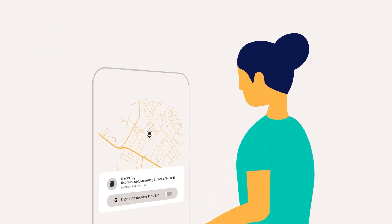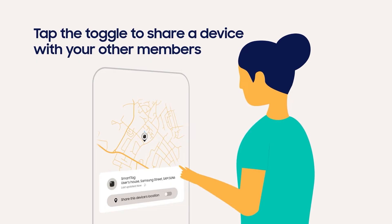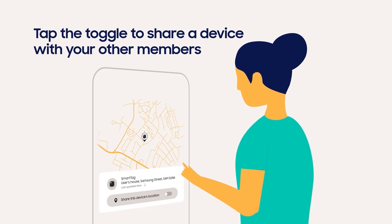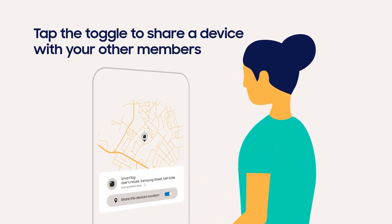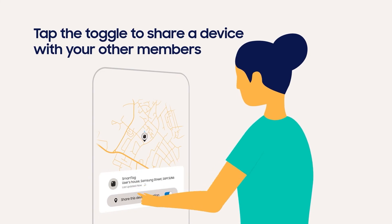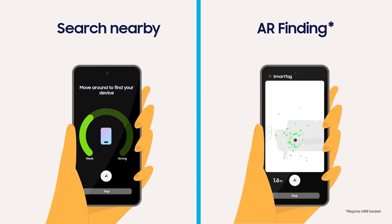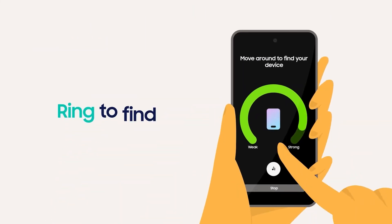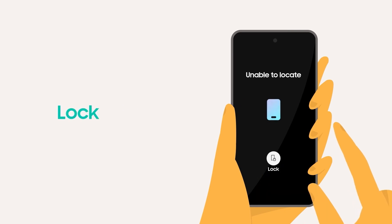Any device linked with your Samsung account will appear. Just tap the toggle on to share a device with your other members. Tap the device to search for it nearby, ring to find it, or lock it.